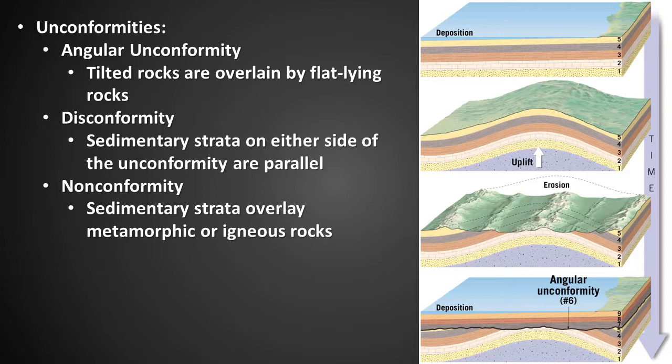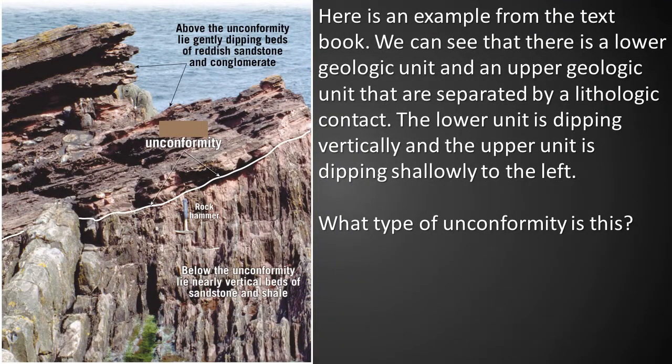The graphic depicts the formation of an angular unconformity. Step one: deposition of a geologic unit or units. Step two: uplift and folding of the older unit or units. Step three: erosion of these older geologic units. Step four: deposition of younger geologic units. From the textbook example, we can see a lower geologic unit dipping vertically and an upper unit dipping shallowly to the left, separated by a lithologic contact. This is an example of an angular unconformity.